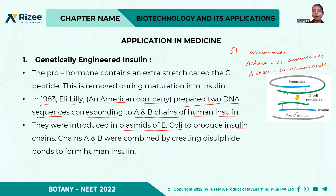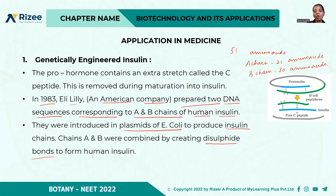The main challenge is in assembling the two chains. In the case of pro-insulin, the C peptide connects the chains. Chains A and B combine separately by creating disulfide bonds to form human insulin.